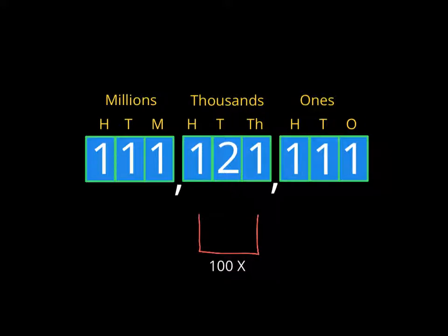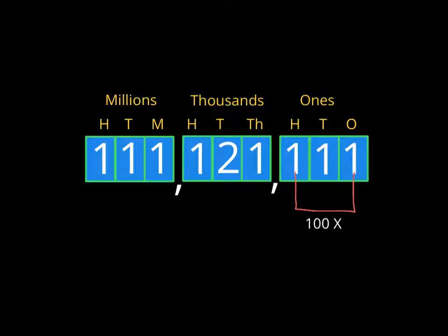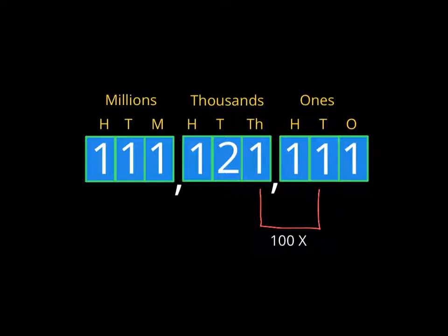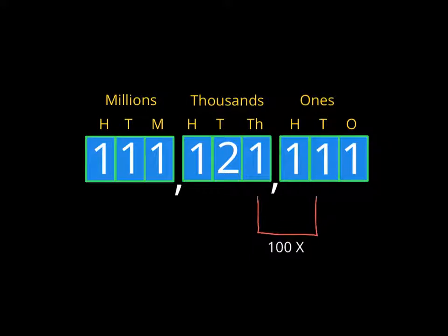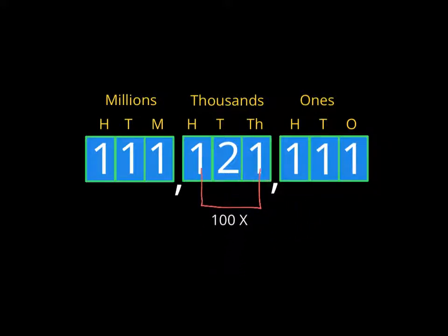Nothing changes when we go to the relationship of 100 times bigger. The 1 in the 100s column is 100 times bigger than the 1 in the 1s column. The 1 in the 1000s column is 100 times bigger than the 1 in the 10s column. Just remember, if the relationship between adjacent places is 10, then two places away is 10 times 10, which is 100. So if you see 2 identical digits 2 places away, then they're 100 times different.